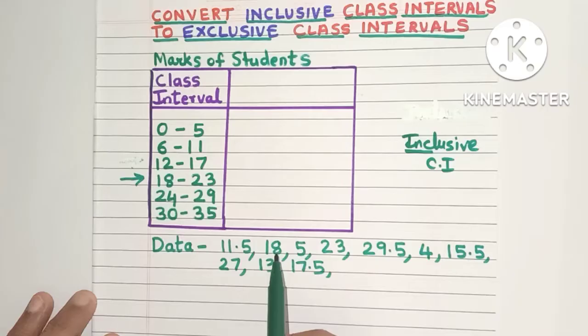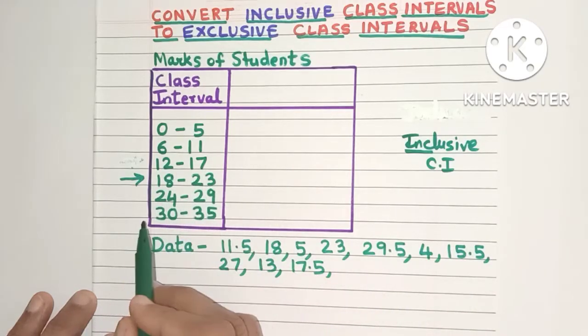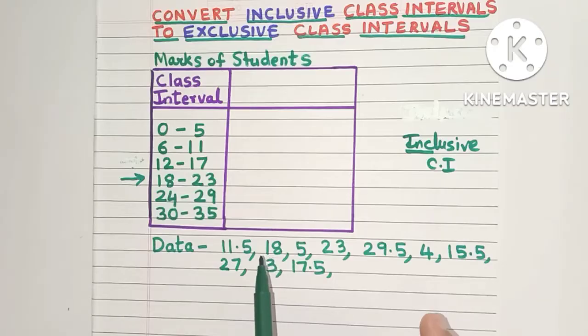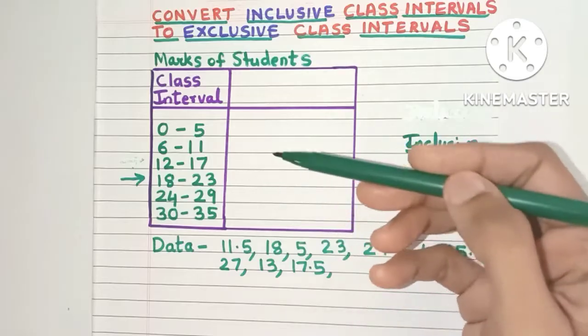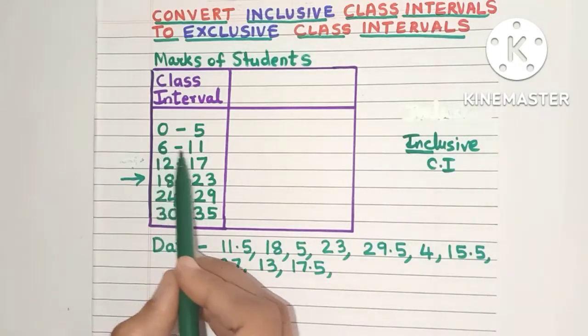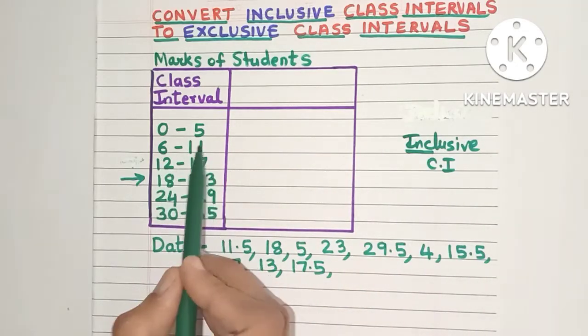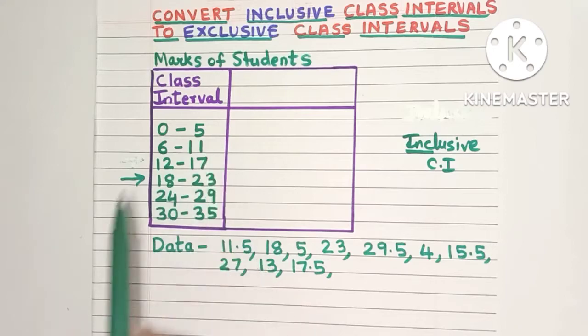So for example if I have marks 18 and 23 both these marks will go in this class interval. Now suppose a student has scored 11.5 marks. Let's see in which class interval the marks will go into. Now this is 6 to 11. So 11.5 is greater than 11. So it will not go in this class interval.